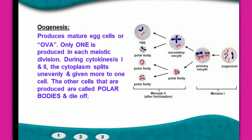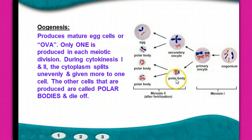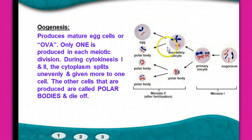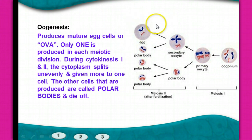Oogenesis is the female process. It's meiosis, but we call it something different in each gender. In oogenesis, this produces a single mature egg cell or ova — there's only one produced in each meiotic division. During cytokinesis I, more cytoplasm is given to one cell compared to the other. We call the smaller one a polar body — it contains chromosomes, but doesn't have enough cytoplasm or organelles to sustain itself.